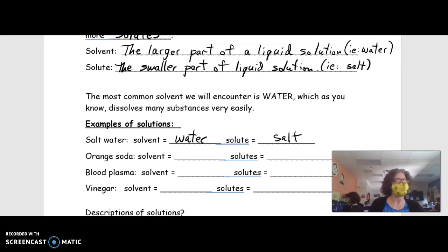For orange soda, what do you think the solvent is? Still water. All of the sodas that you drink, the main part is water. And what are solutes that you would find in soda? Definitely sugar, and that would be dissolved in there. What makes the bubbles? Carbon dioxide gas. Very good. And there's probably other flavorings in there that we could add.